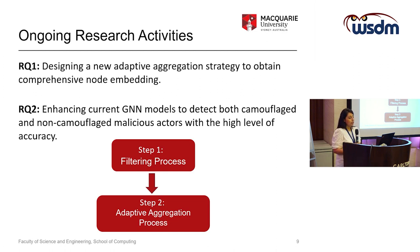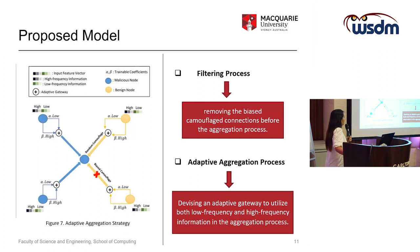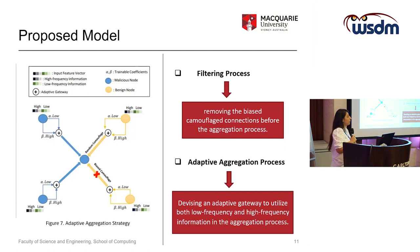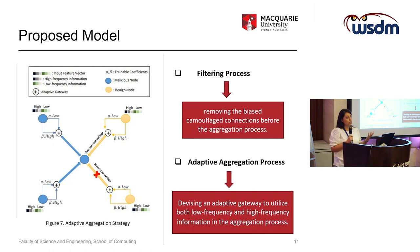We propose a model with two steps: the filtering process and the adaptive aggregation process. This is the general overview of our model. In the filtering process, we try to remove bias camouflage before the aggregation process. There are two kinds of camouflage in the literature: random camouflage and bias camouflage. In random camouflage, fraudsters randomly connect to normal users. In bias camouflage, they connect specifically to high-degree popular nodes. We remove bias camouflage because high-degree popular nodes cannot contribute to unique representations.